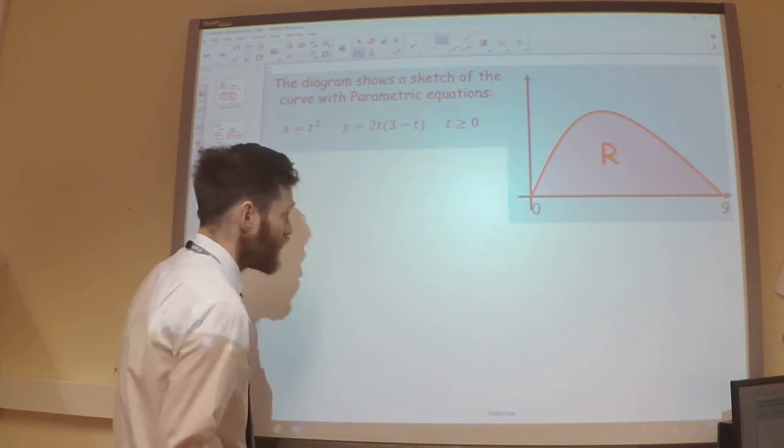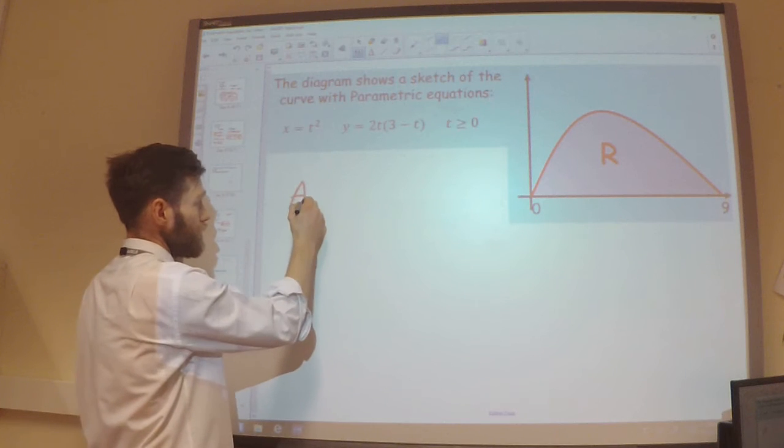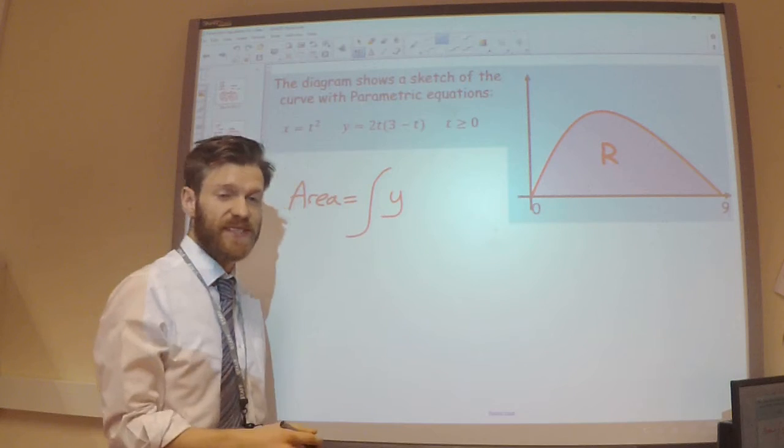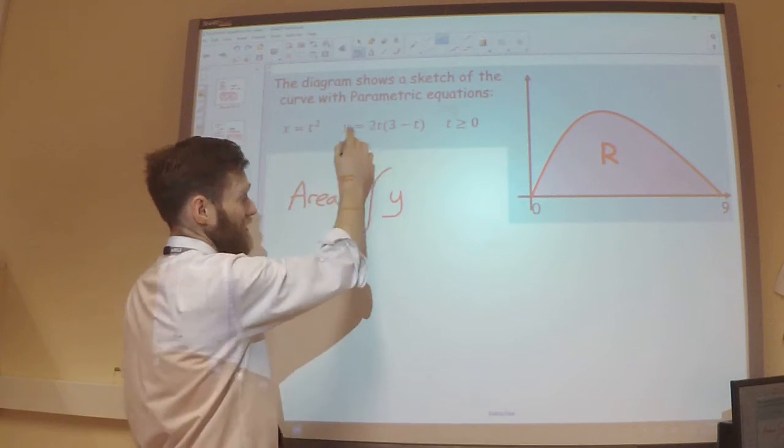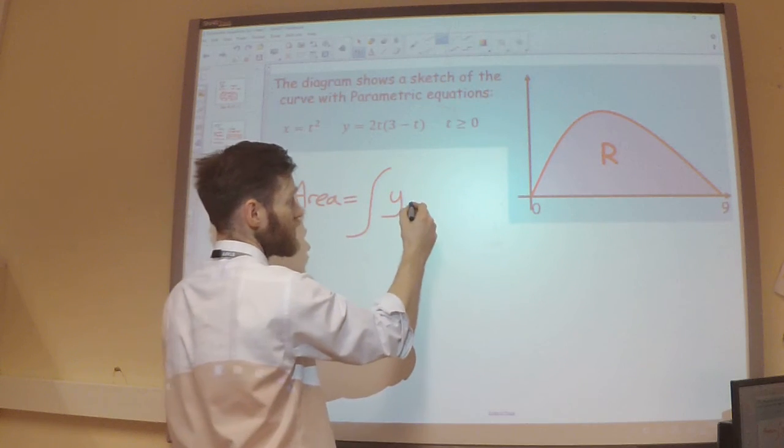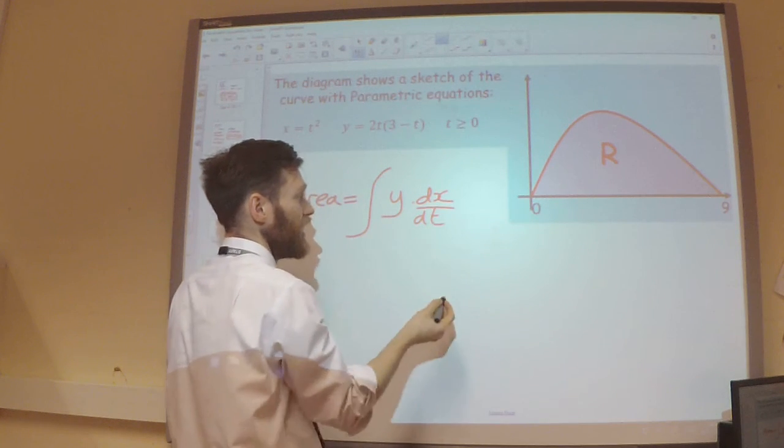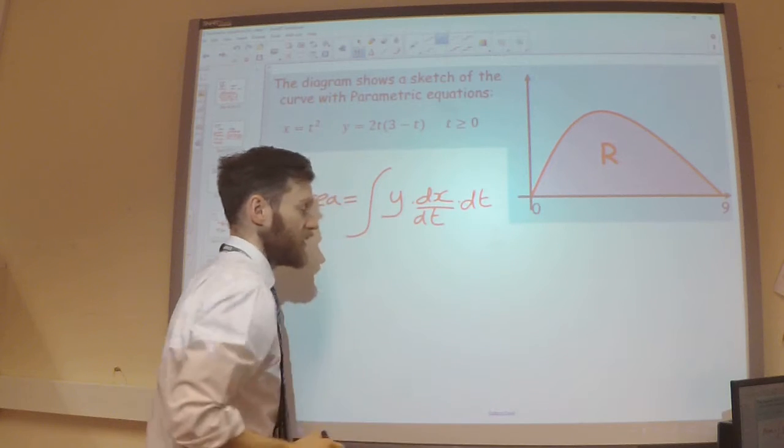My general rule for finding the area when it's expressed in terms of parameter t is y multiplied by dx/dt, and I'm going to integrate that with respect to t.